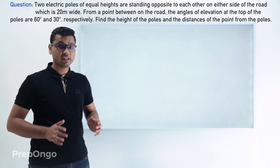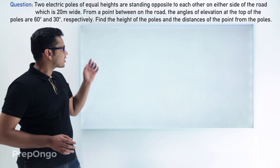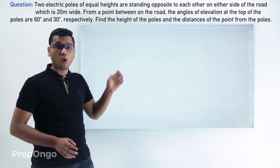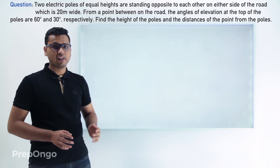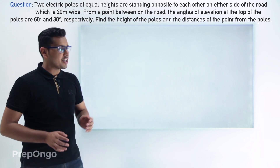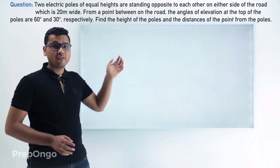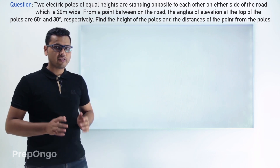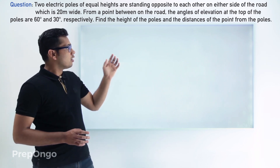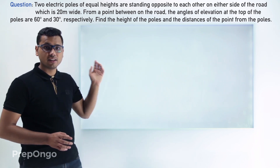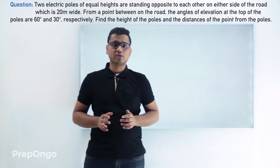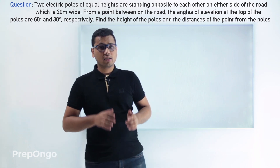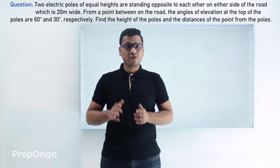Hello everyone, let's have a look at this question. This question says that there are two electric poles of the same height standing opposite to each other on either side of the road which is 20 meters wide. There is a point on the road and from this point the angles of elevation to the top of the poles are 60 degrees and 30 degrees respectively. We have to find the height of the poles and also the distance of this point from the poles.